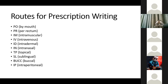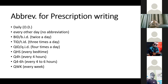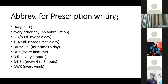Abbreviations for frequency in prescription writing include OD (once daily). Every other day has no abbreviation and must be written in full. BID means twice a day, TID means three times a day, and QID means four times a day.